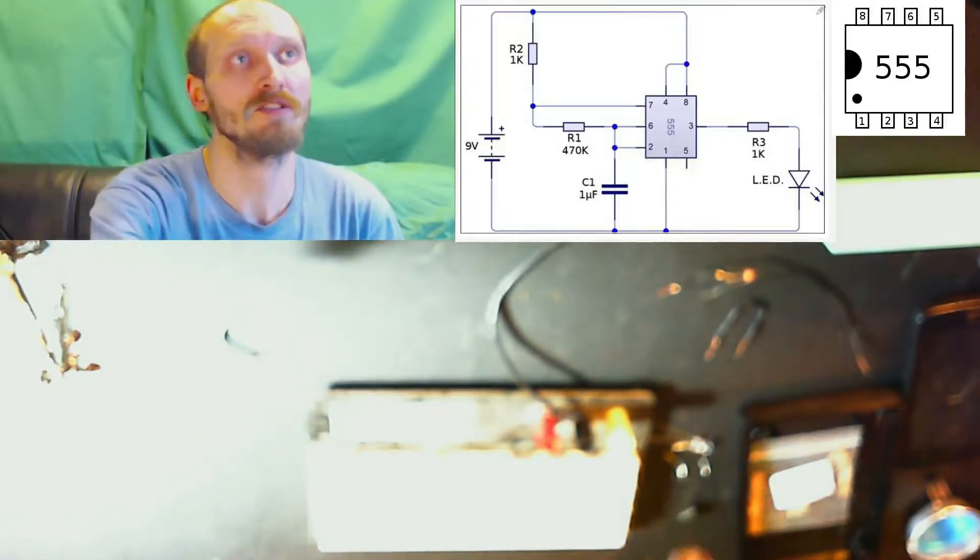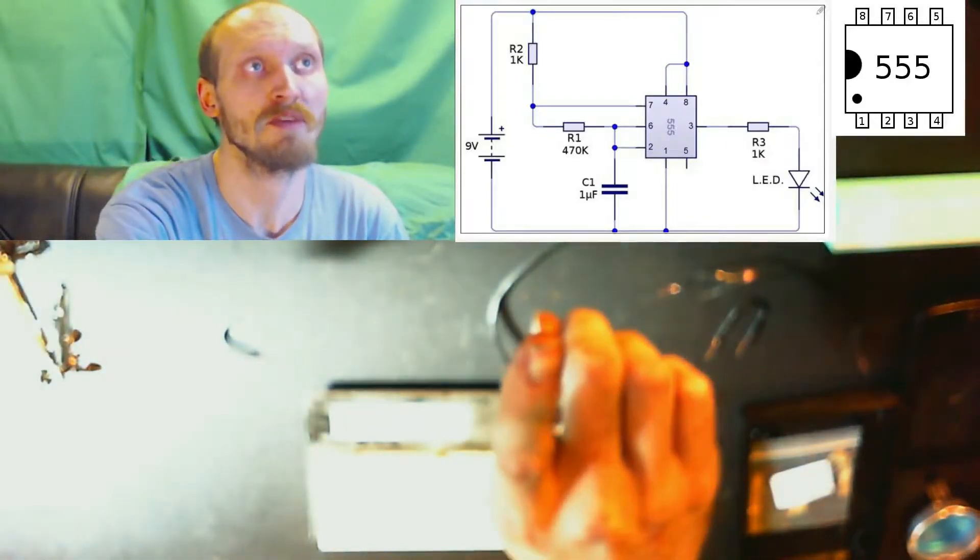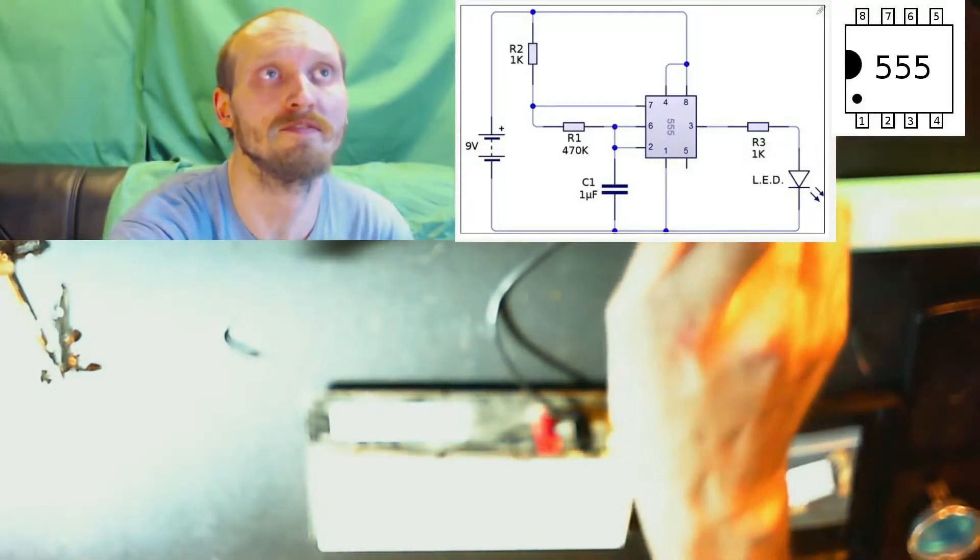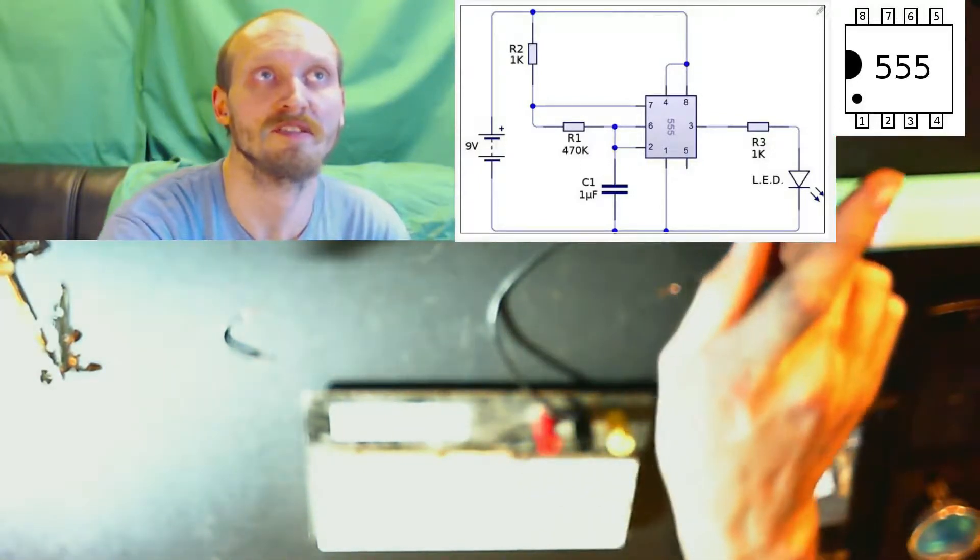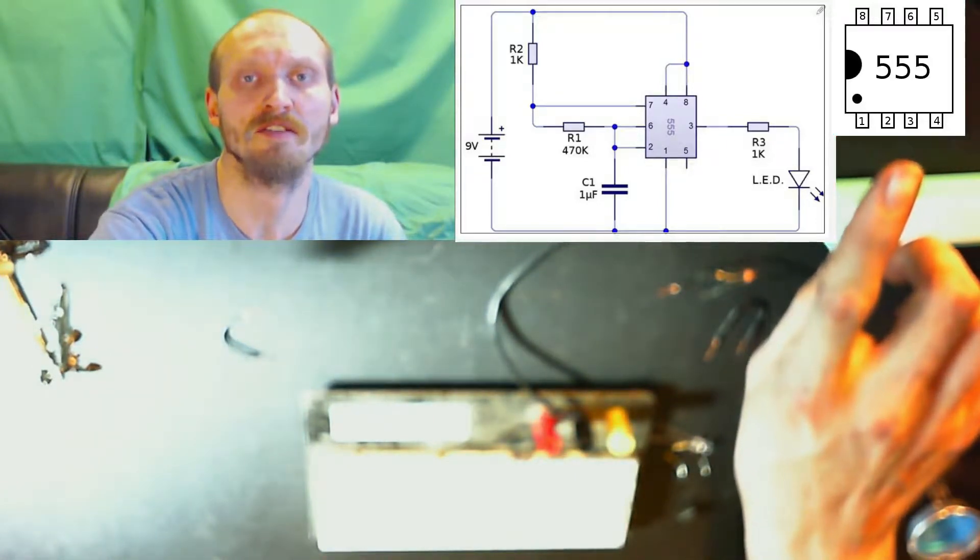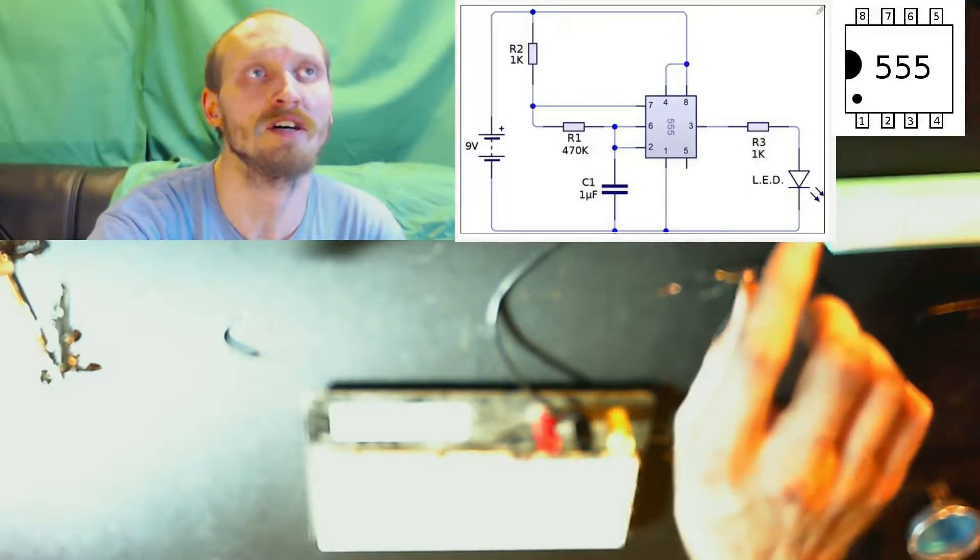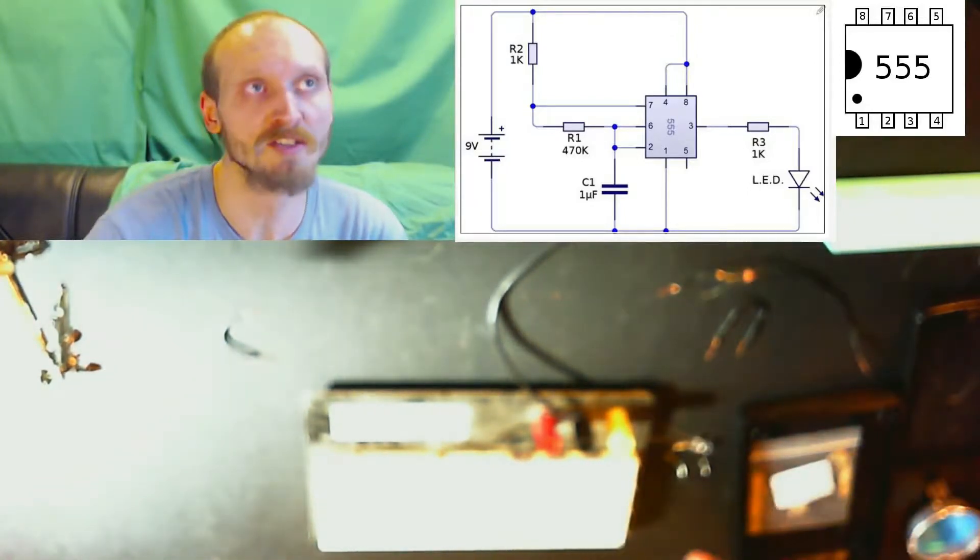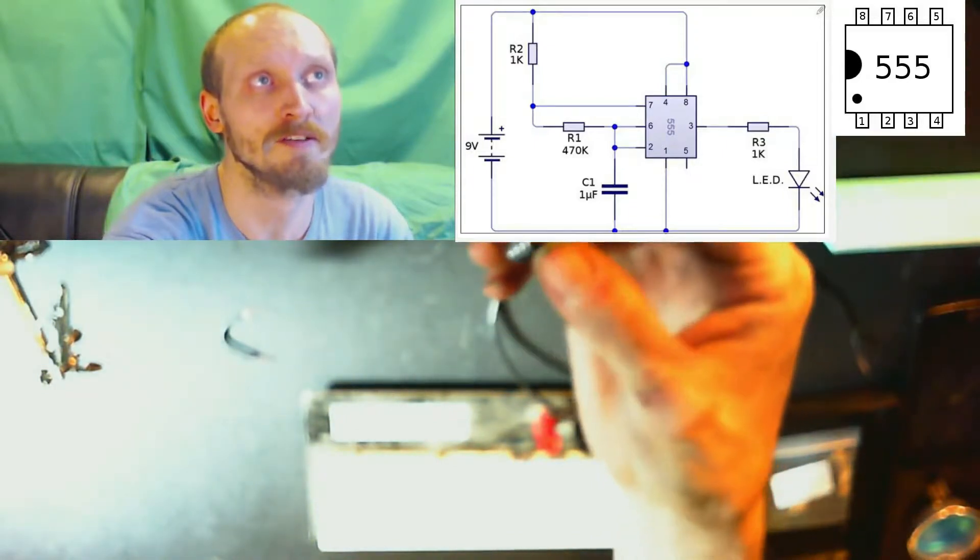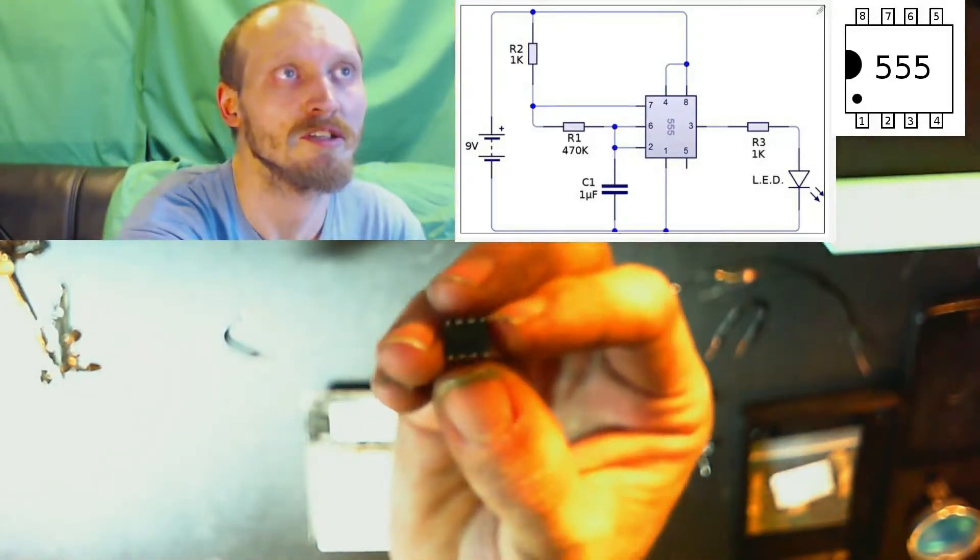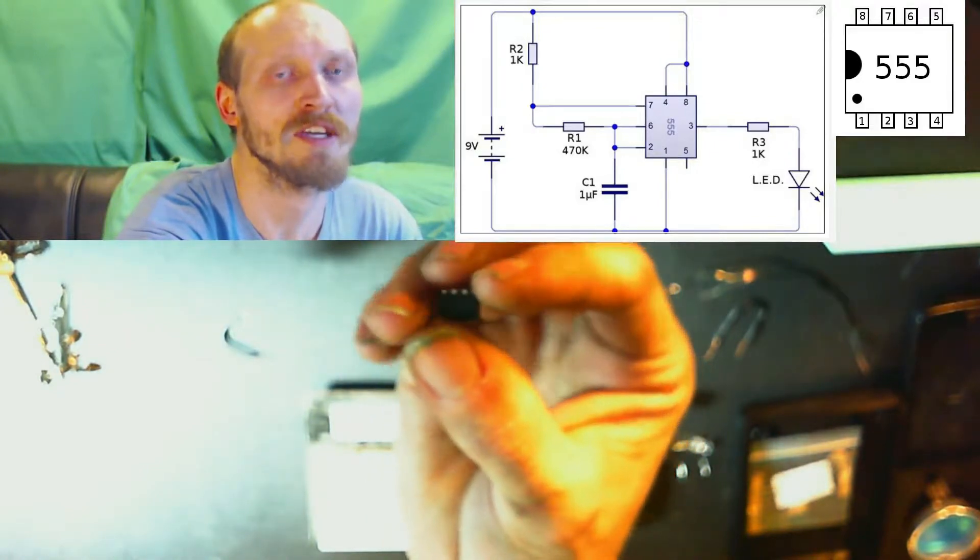Right here is our schematic. We are using a 555. My 555 timer circuit which pin out is laid out right there in this diagram. It's an NE555. And it actually is this right here. If you can see it, but you cannot. NE555 has 8 pins.